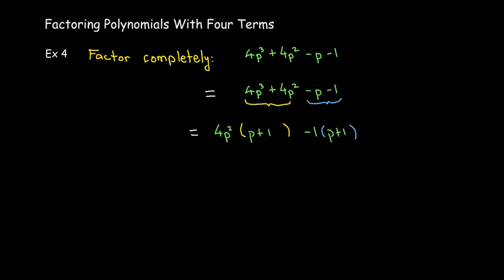1 so I have a positive p inside the parentheses. So, again, p plus 1, p plus 1. That's one binomial. The other binomial will be 4p squared minus 1.